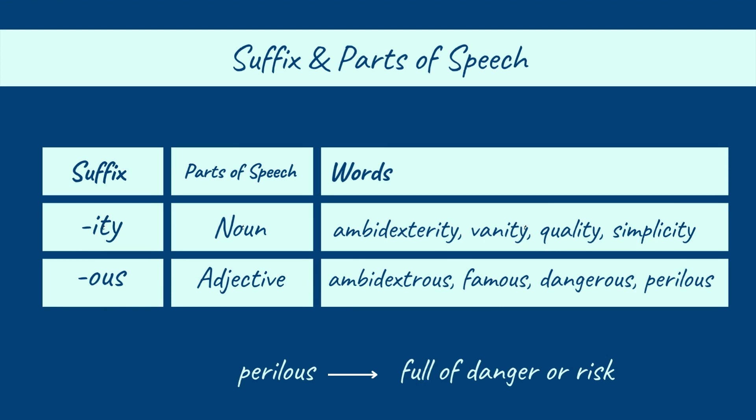For example: ambidexterity, vanity, quality, simplicity. And -ous is being used for making the adjective form. For example: ambidextrous, famous, dangerous, perilous. Perilous means full of danger or risk. I hope you are clear on this point.